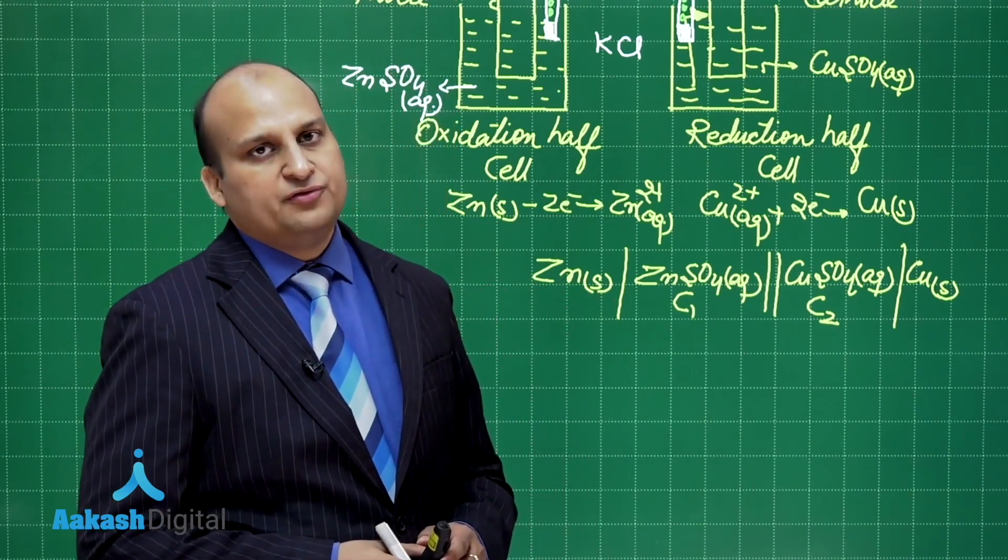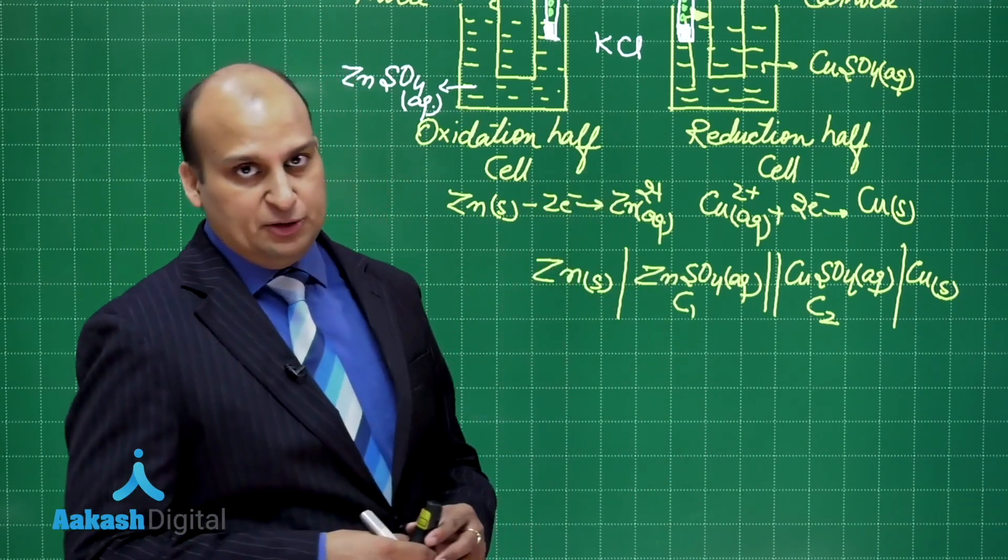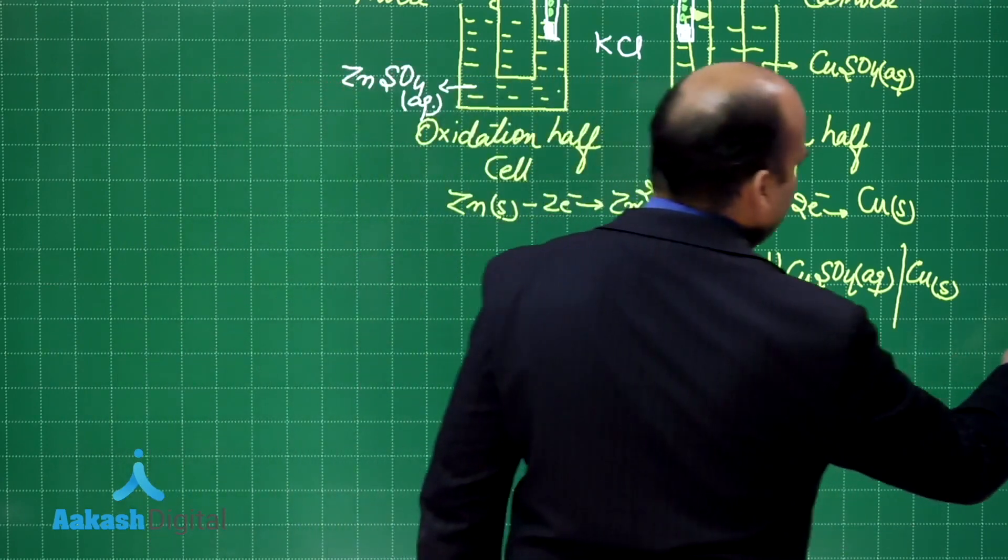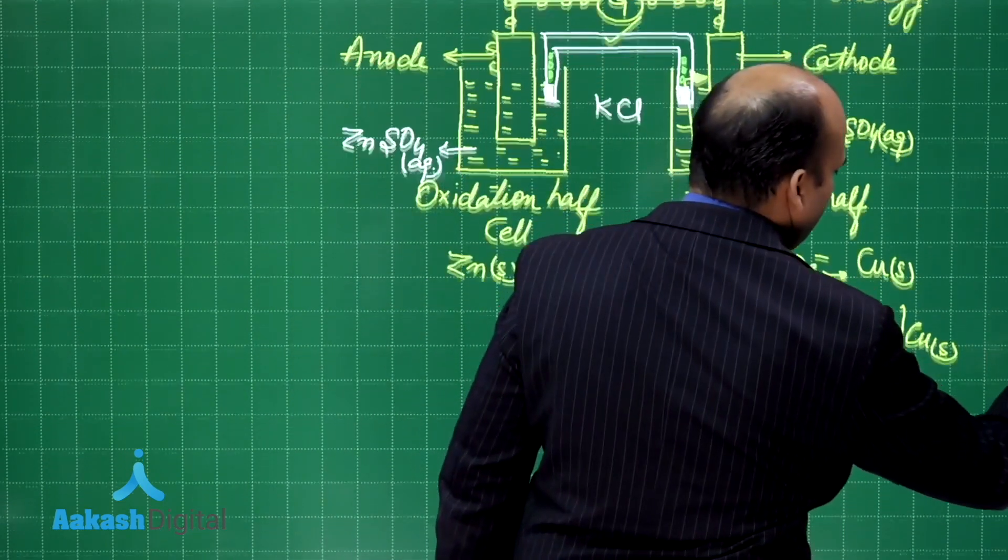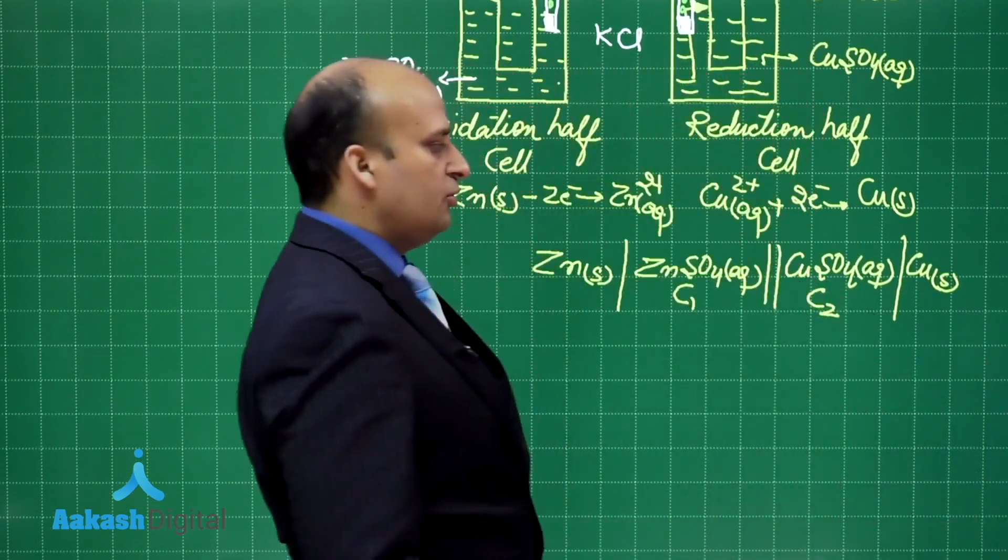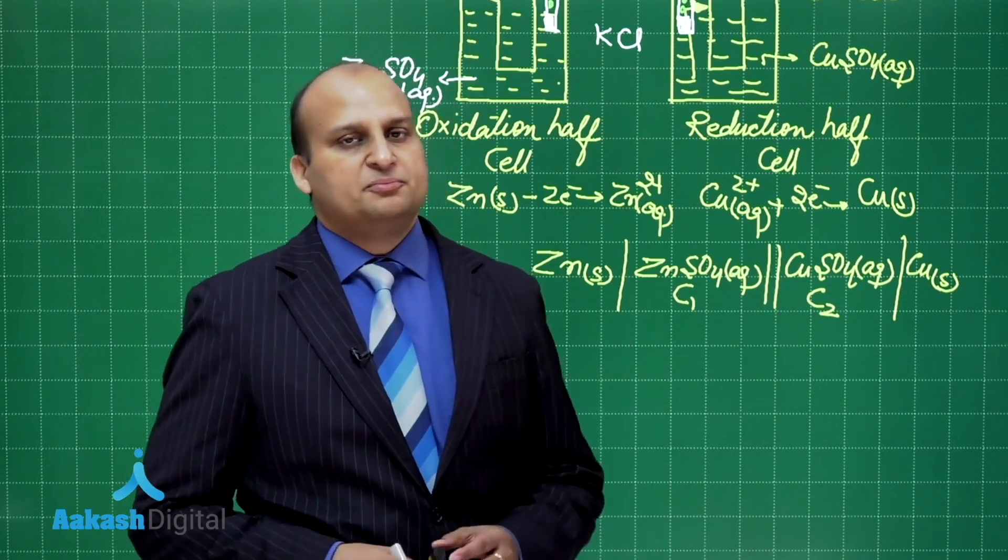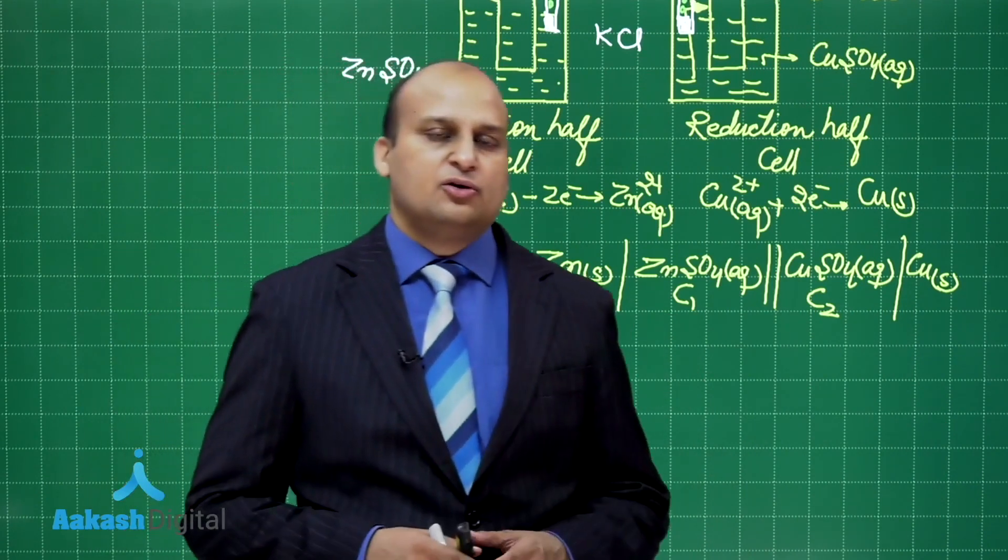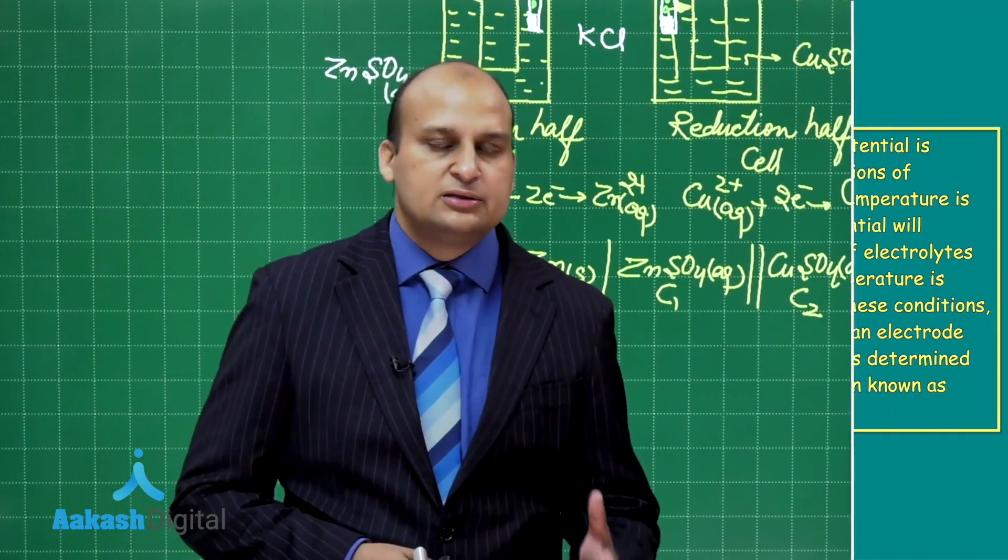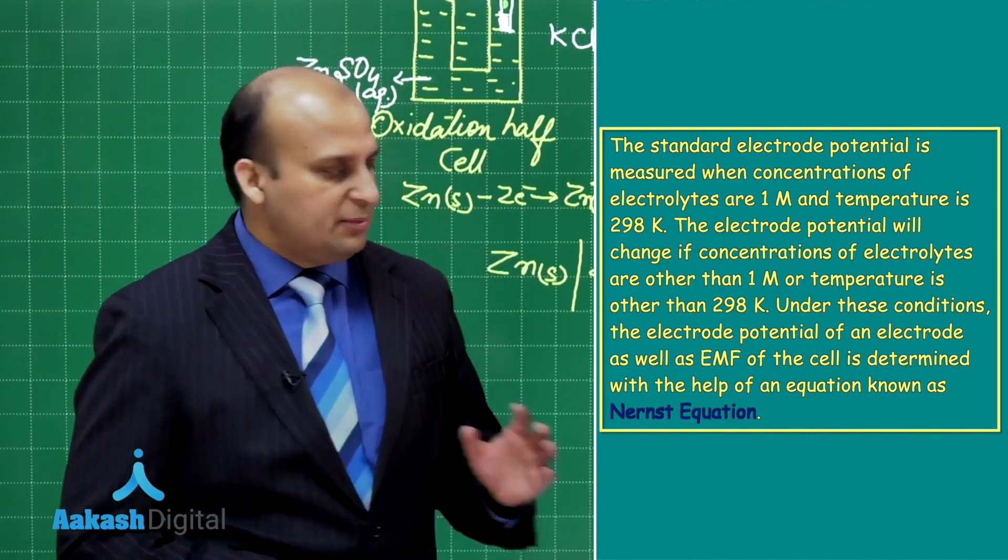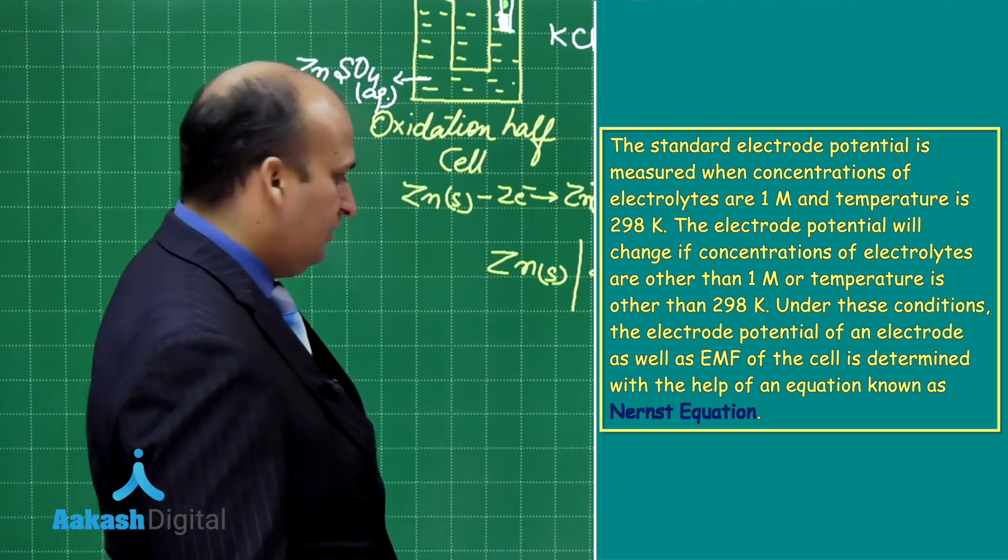Point number 2 is, how do we find out how much voltage is being produced by this? If I want to measure it, simply I can use this galvanometer. But theoretically, how do I talk about it? How do I talk about the measurement of the EMF of the cell? So, dear friends, before we talk about the measurement of EMF of the cell, we will have to talk about what we call as the Nernst equation. I am giving you the Nernst equation over here for understanding purpose. We will talk about it in detail a bit later on.